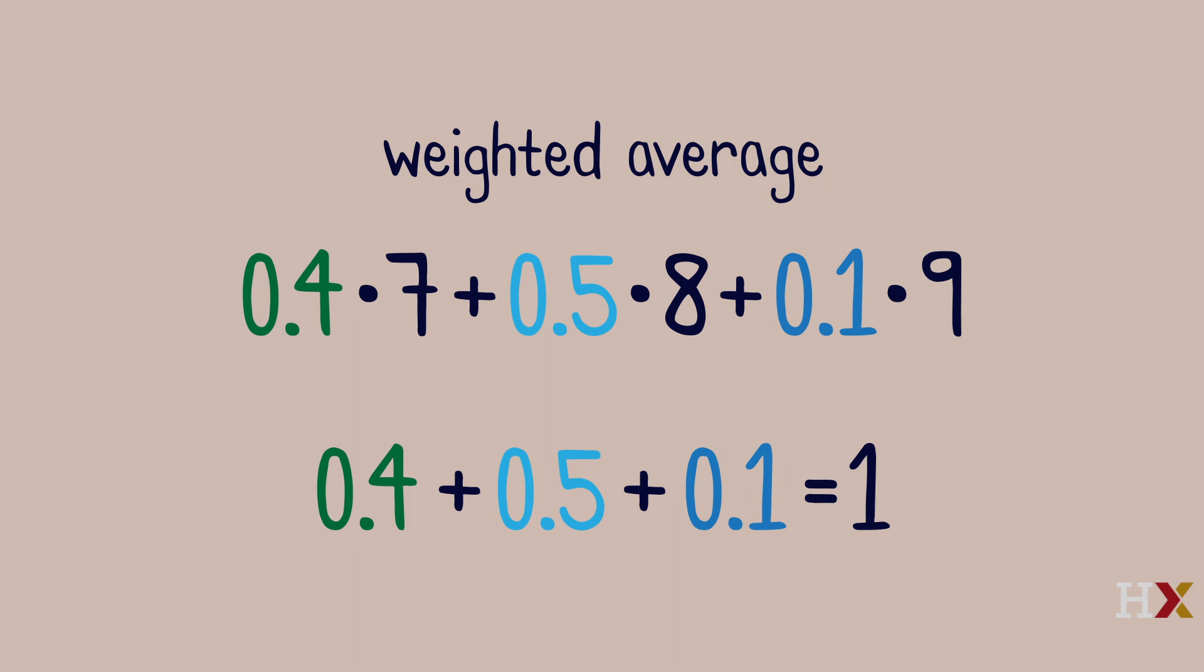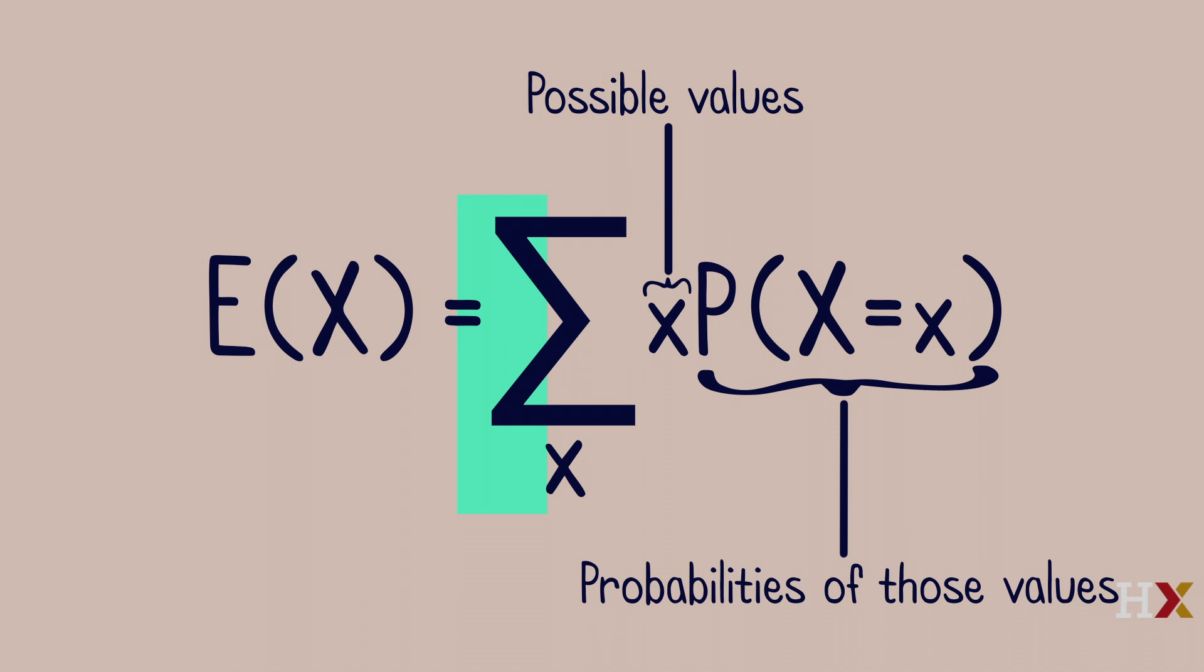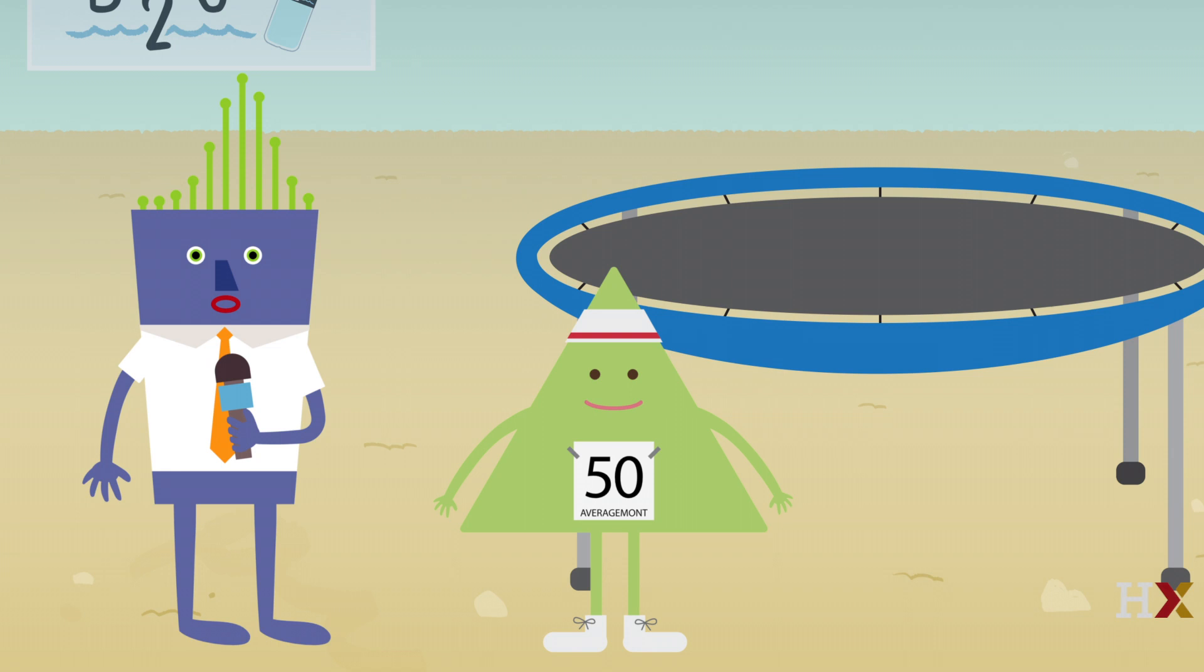Each score is weighted based on the fraction of time it occurred in the sample. In general, the expected value of a discrete random variable X is the sum of possible values times the probabilities of those values. E of X equals the sum over X of X times the probability that big X equals little x. Each possible value of X gets weighted according to its probability.